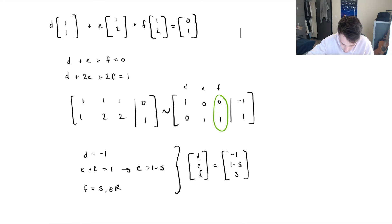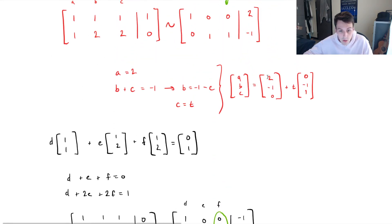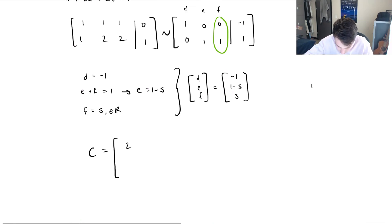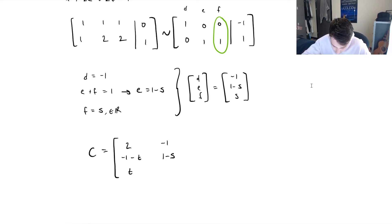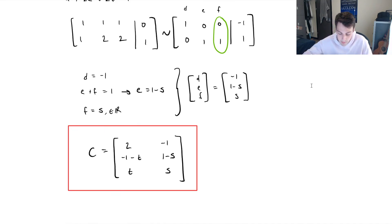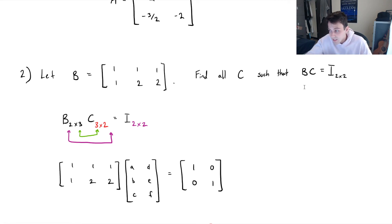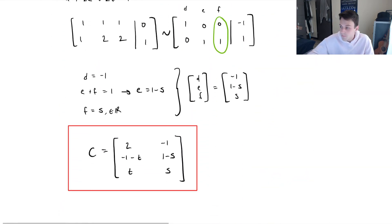Finally, we can now assemble matrix C. The first column was [A, B, C] which equals [2, negative 1 minus T, T], and the second column is [D, E, F] which equals [negative 1, 1 minus S, S]. This is our final answer — the matrix C such that B times C equals the identity matrix. Note that B times C is different from C times B, so keep that in mind when doing matrix multiplication. I hope this video was helpful.